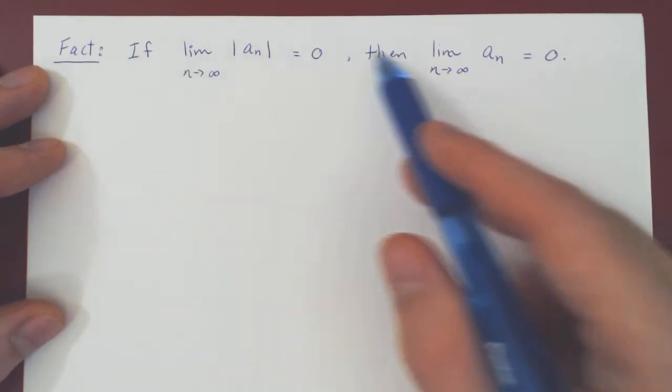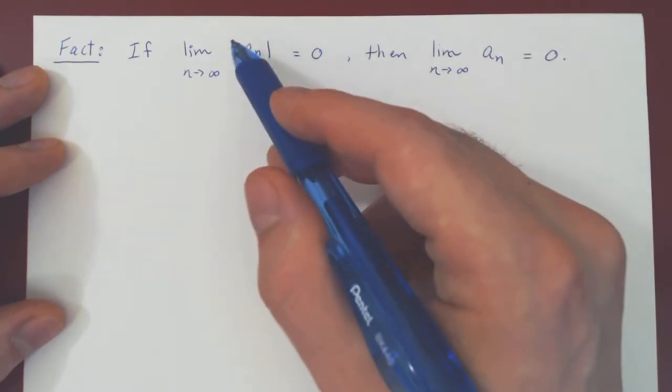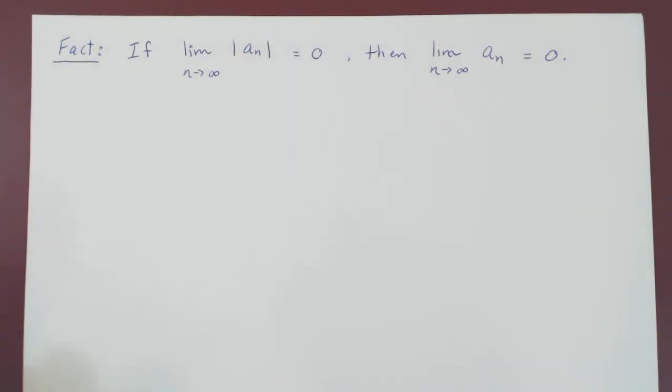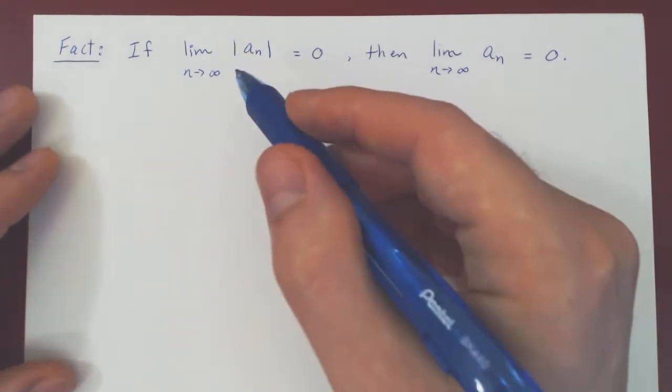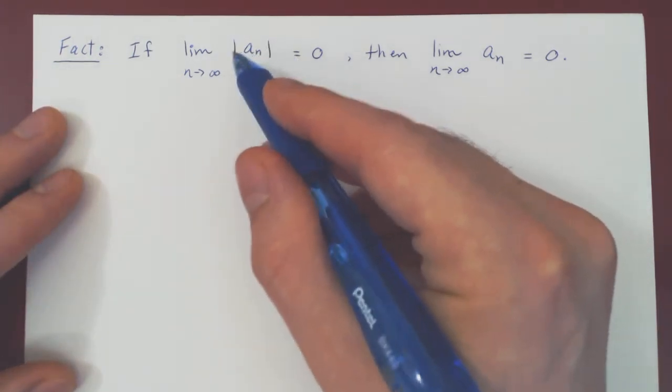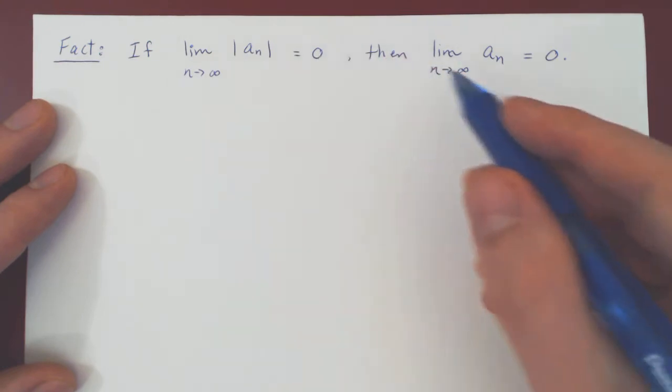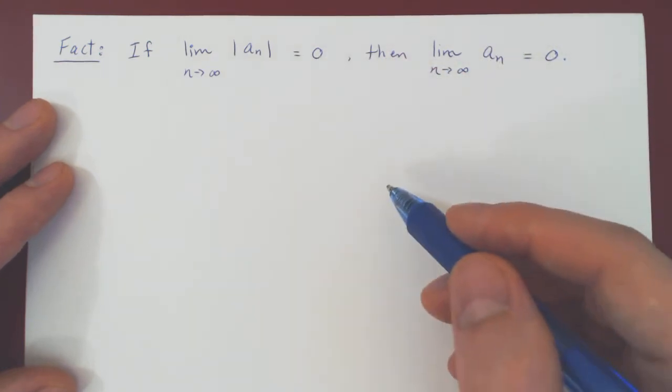And if you think about this it's a very intuitive result. The absolute value is the magnitude of a real number. So we're saying the magnitude of a_n shrinks to 0, there's really only one option, a_n must shrink to 0 as well.